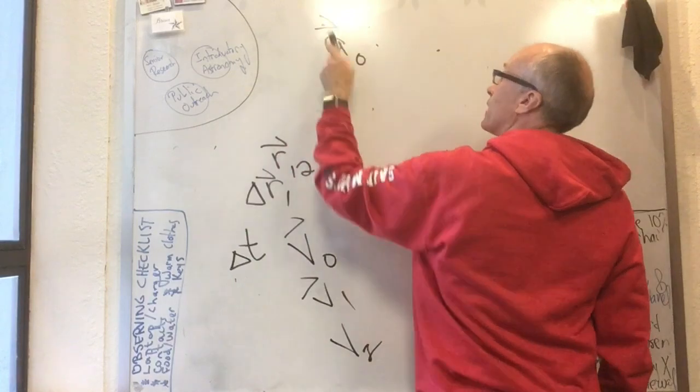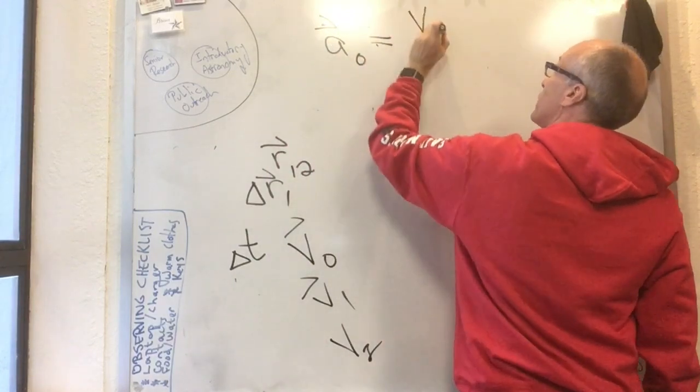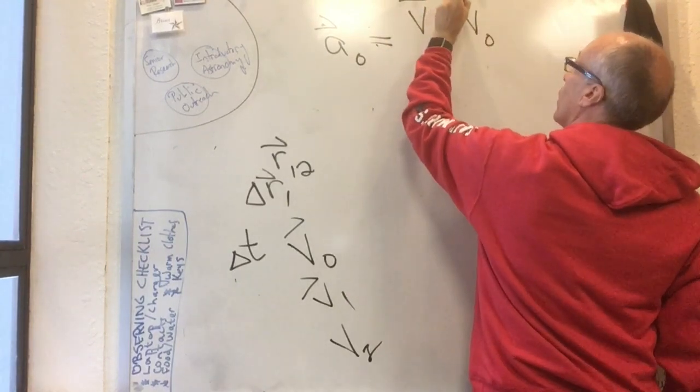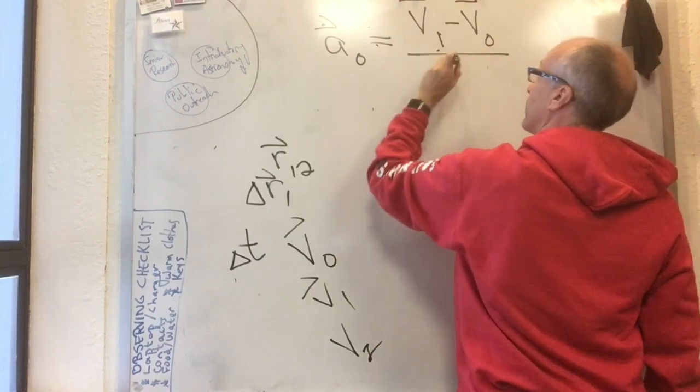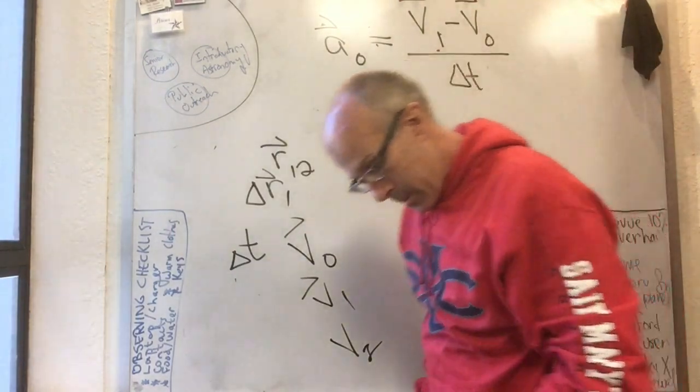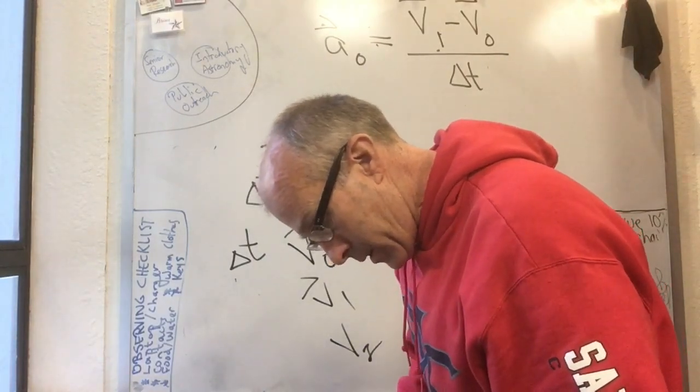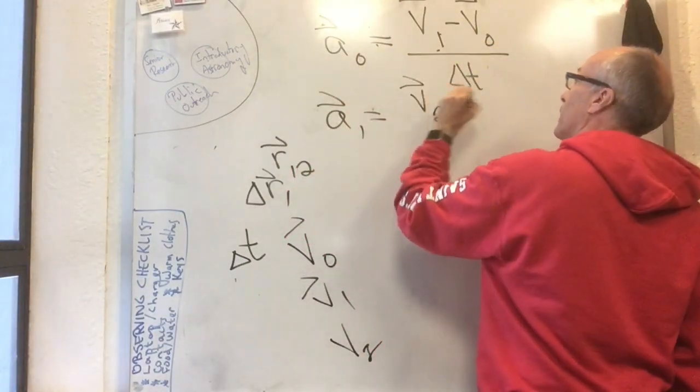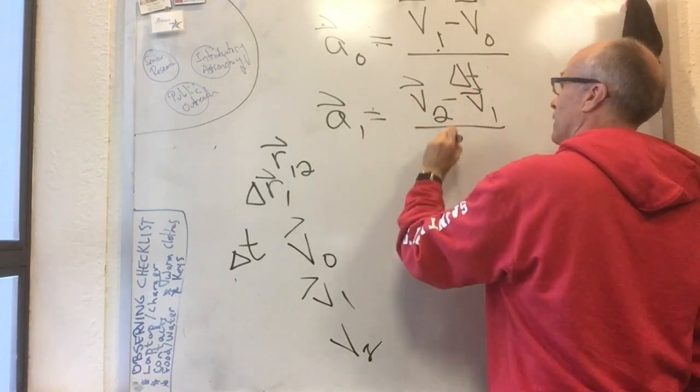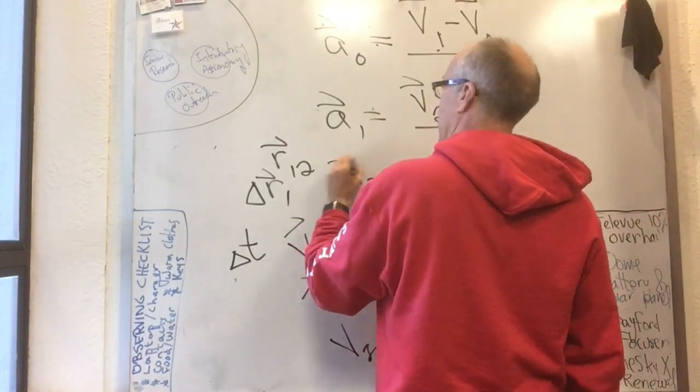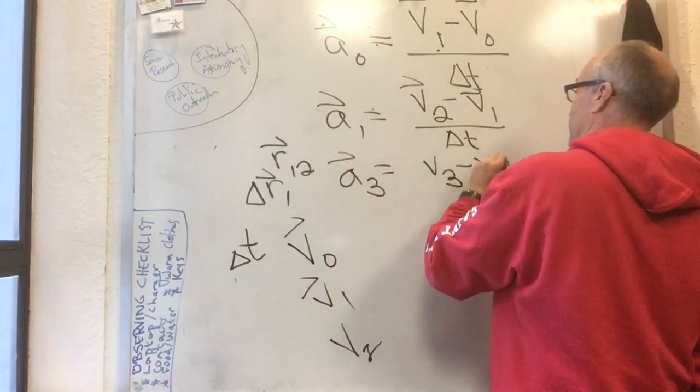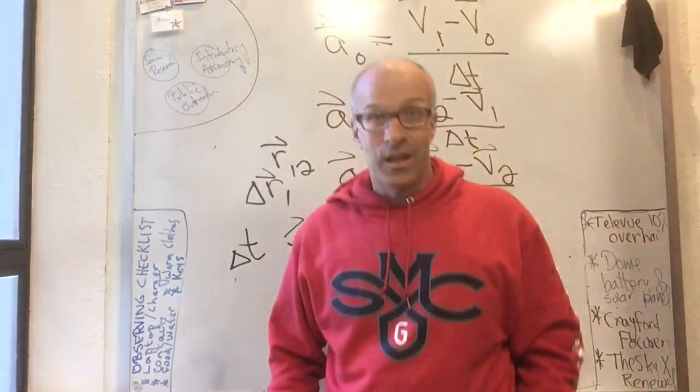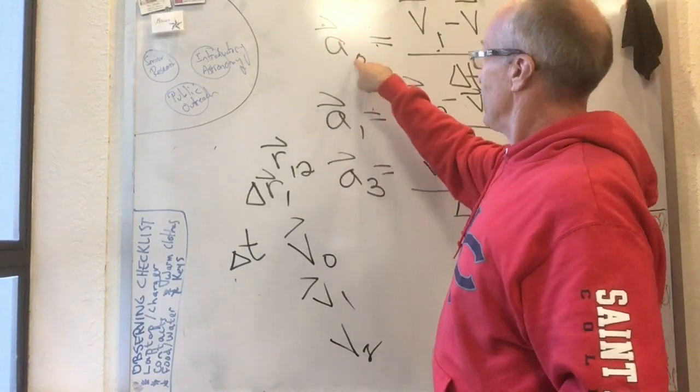What is a naught? a naught, the acceleration, is going to be v1 minus v0 over delta t. And a1 is going to be v2 minus v1 over delta t. And a2 is going to be v3 minus v2 over delta t.